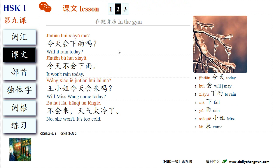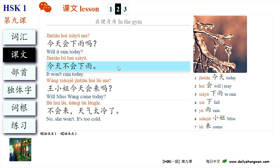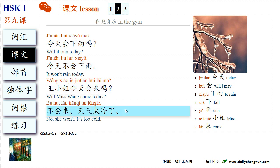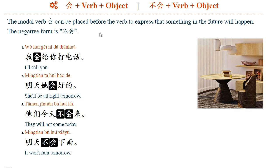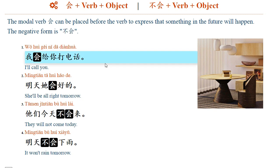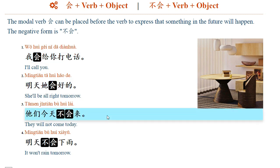在健身房: 今天会下雨吗? 今天不会下雨。 王小姐今天会来吗? 不会来，天气太冷了。 The modal verb 会 can be placed before the verb to express that something in the future will happen. The negative form is 不会。 For example: 我会给你打电话。 明天它会好的。 他们今天不会来。